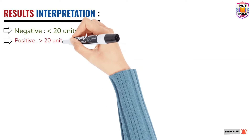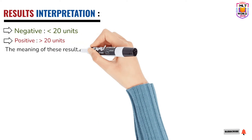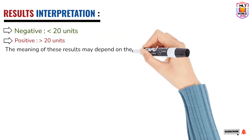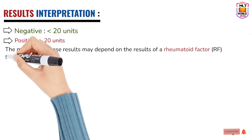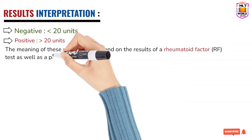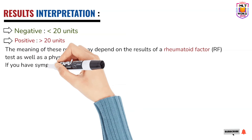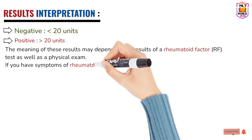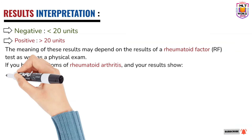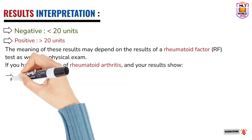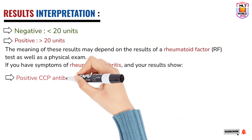If the result is negative, it shows that the blood does not contain anti-CCP antibodies. If positive, it means anti-CCP antibodies are found in the blood, which is a sign of rheumatoid arthritis. As mentioned, the rheumatoid factor test is also done alongside the anti-CCP test.